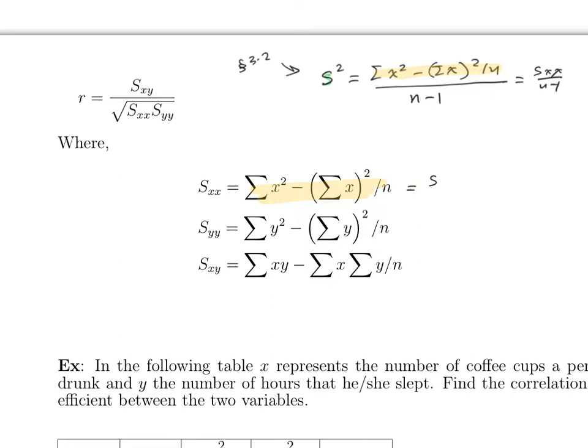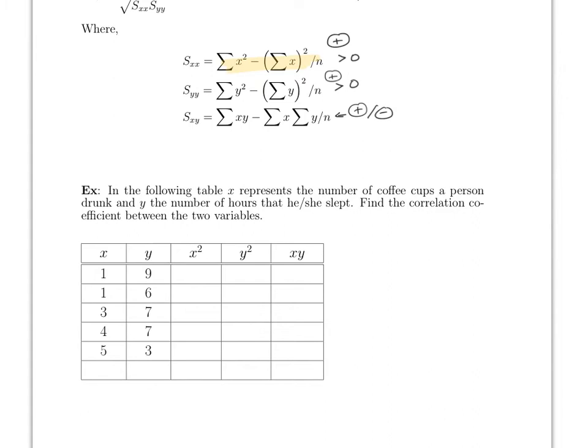S_xx always has to be positive, and S_yy always has to be positive. S_xy is the only one that can be positive or negative — that is okay. If S_xx or S_yy is negative, something is wrong and you need to check.